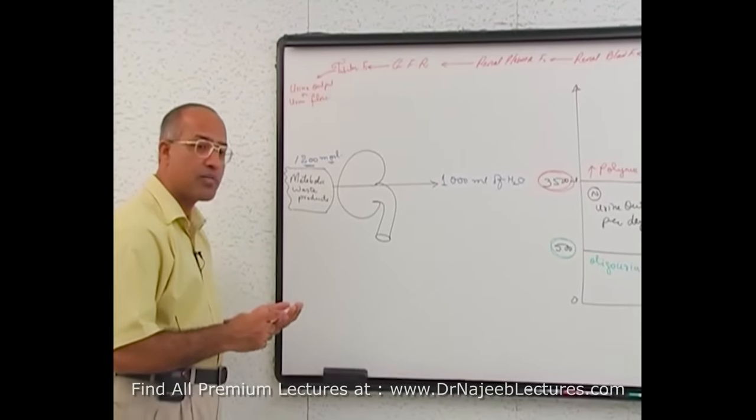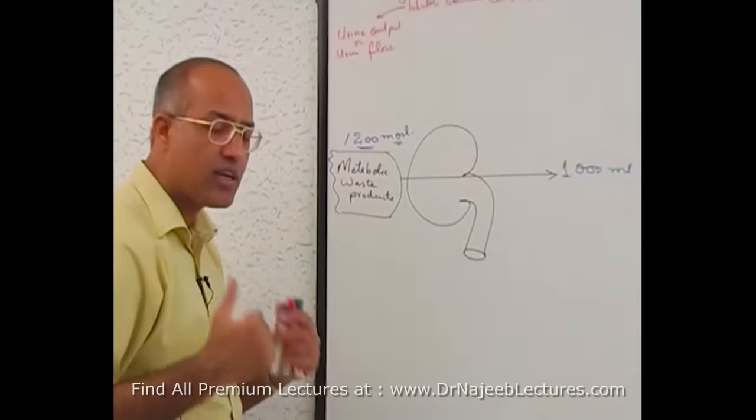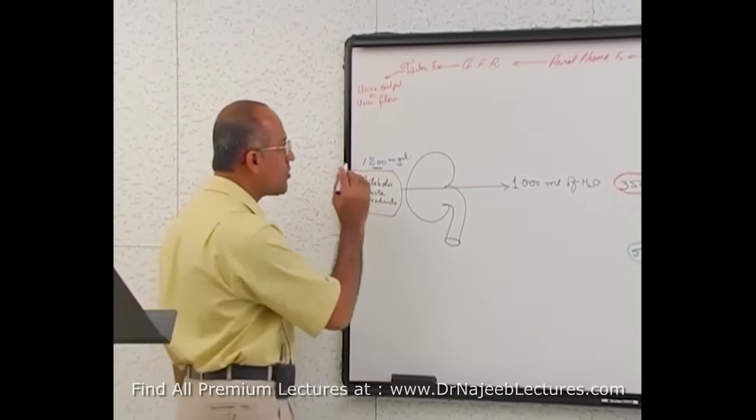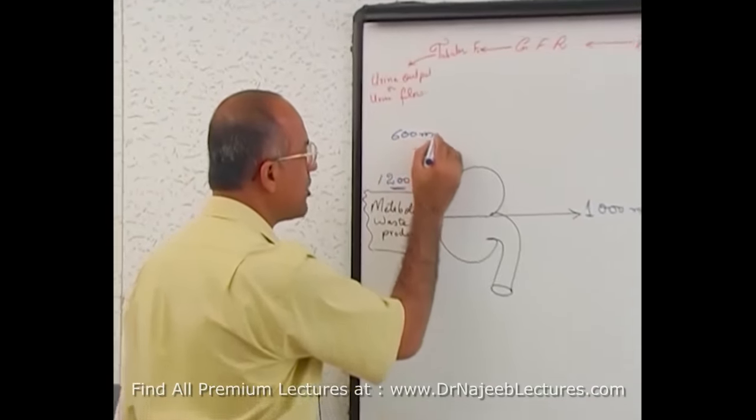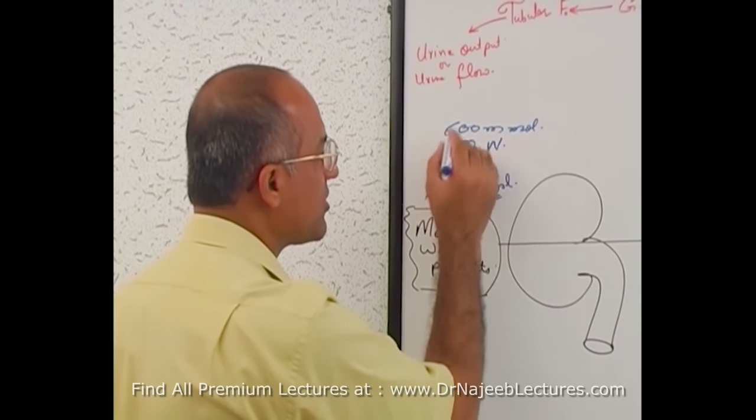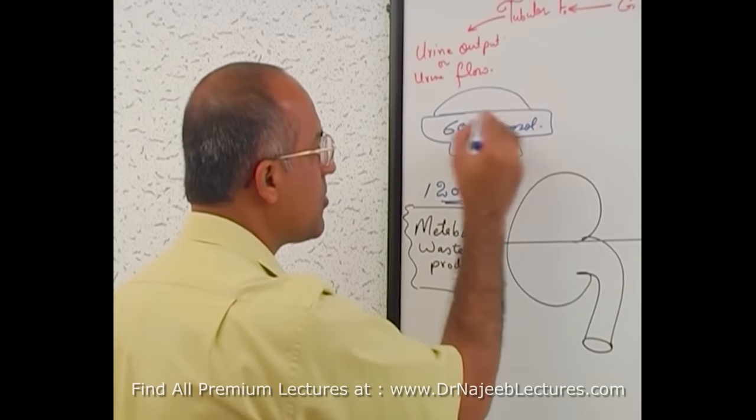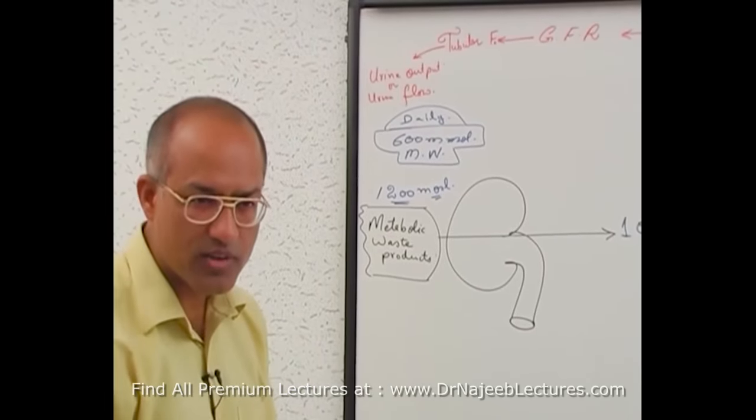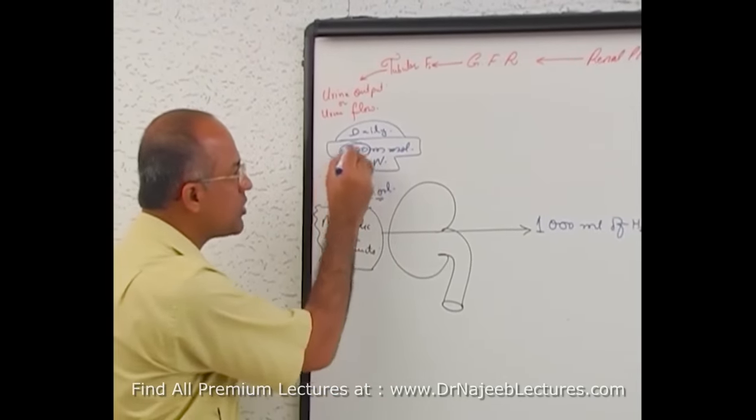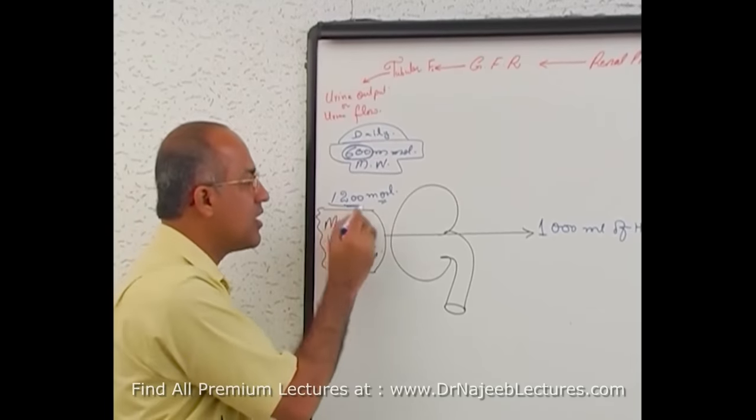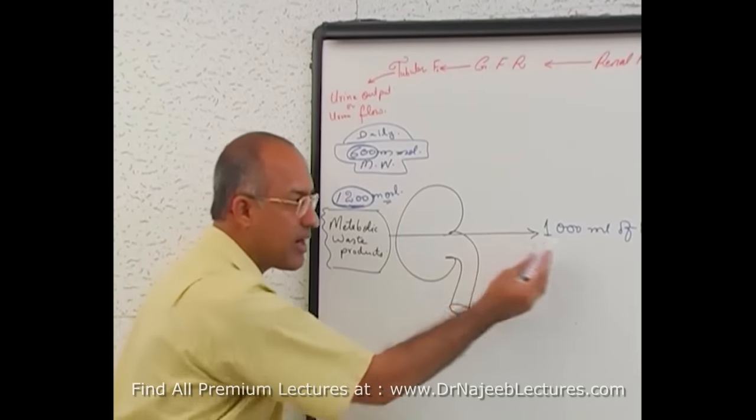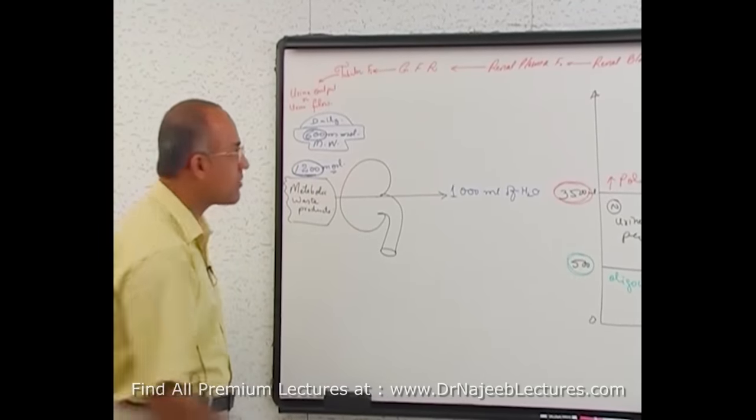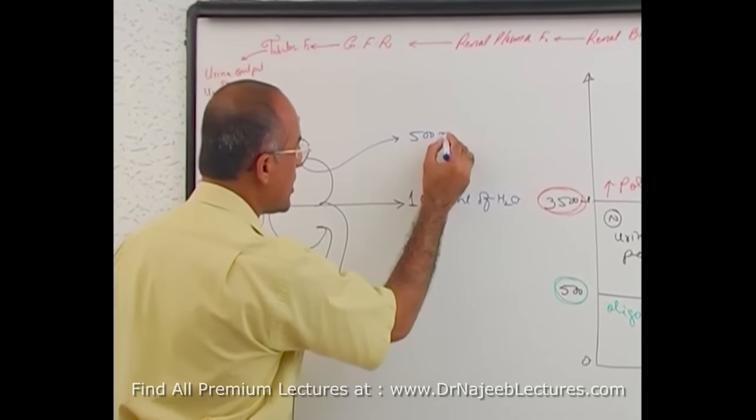In a normal person, how much metabolic waste is produced per day? In a normal person with 70 kg weight on normal physical activity and average diet, such a person normally produces daily about 600 millimoles of metabolic waste. Now, if kidney can concentrate 1200 units of waste in one liter, then to get rid of 600 units of metabolic waste, kidney should need how much water? 500 ml. That's it.